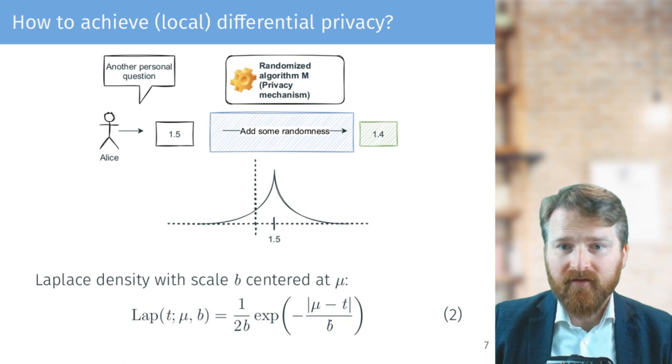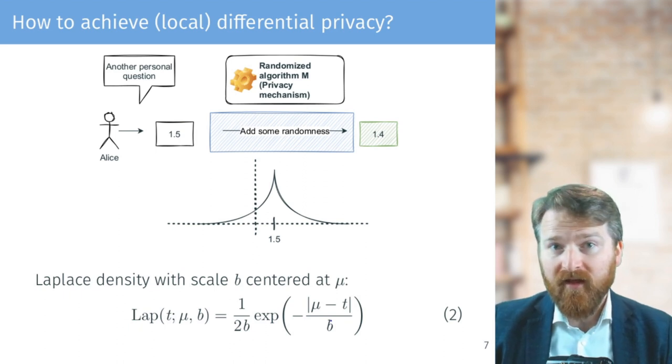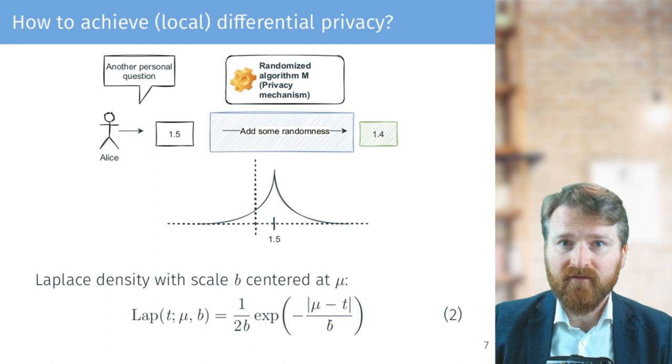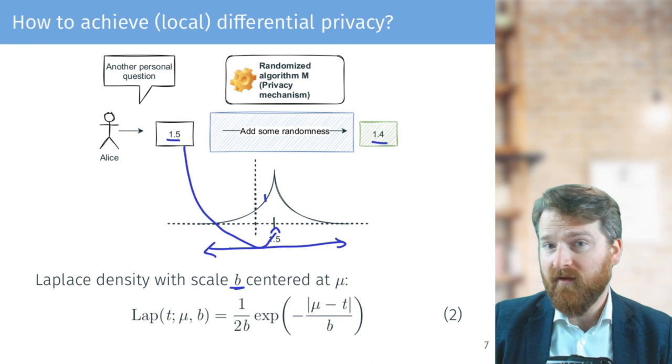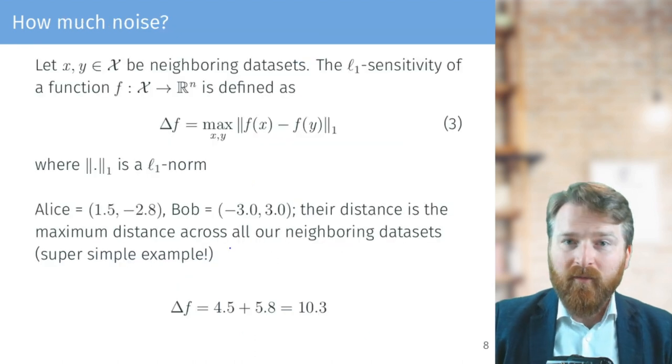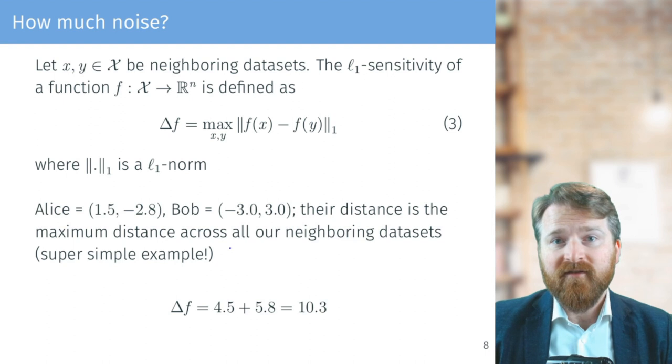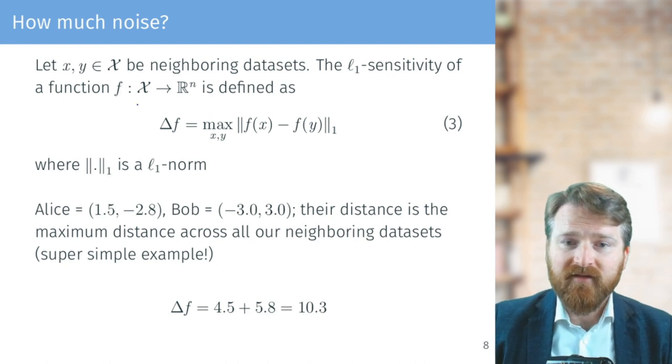How exactly does the randomized mechanism look? We might use some continuous distributions to draw from. For example, here Alice—the true answer would be 1.5—and we might be drawing from a Laplace distribution centered around 1.5 and get some other number, for example 1.4. And the important thing about Laplace density is that it has a scale, so basically how much noise are we adding. And the question of how much noise to add to the randomized algorithm is central to differential privacy, and it's determined by something called L1 sensitivity.